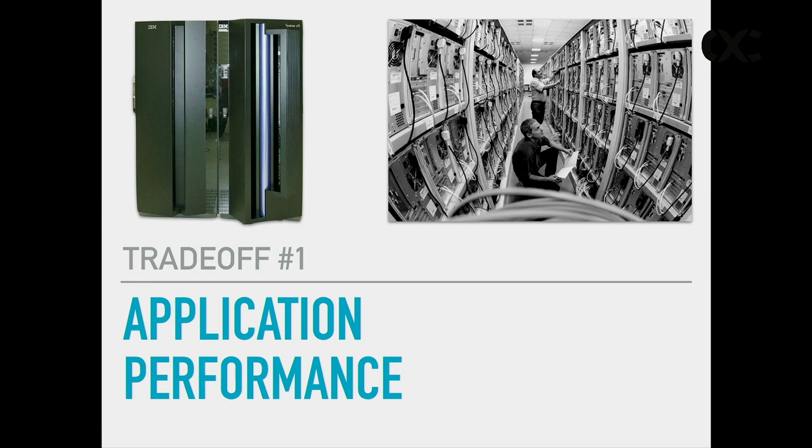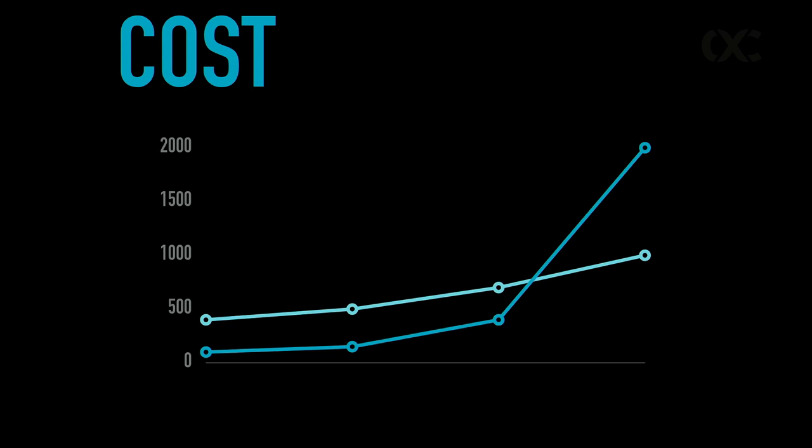The first trade-off I want to talk about is application performance. In the old times we had application performance by having big iron — vast machines, mainframes and that stuff. The new world is off-the-shelf hardware clusters of machines. One of the reasons behind that is cost: at a certain scale you just cannot buy more big iron because it's getting too expensive, or at some point there is nothing to buy when you have Facebook scale.